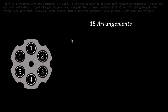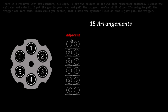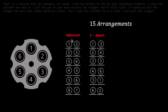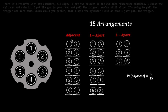These 15 arrangements can be classified in the following ways. They can be adjacent to each other, of which there are 6. They can be one chamber apart, being another 6 positions. Or they can be spaced two chambers apart, of which there are 3. This brings the total to 15 as expected. The probabilities of the two bullets being in these respective arrangements are: 6 over 15 for adjacent bullets, 6 over 15 for those spaced 1 apart, and 3 over 15 for those spaced 2 apart.